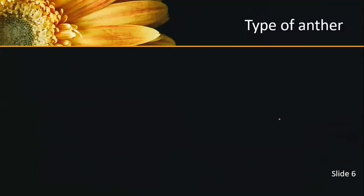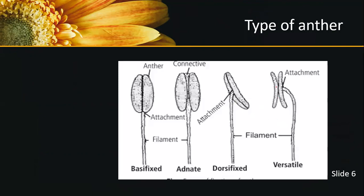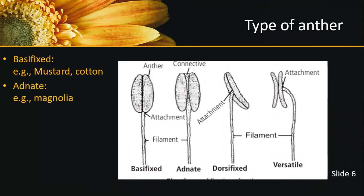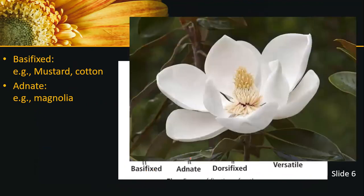These are the types of anther based on number of lobes. Now, based on the attachment of the filament to the anther, there are different types. The first type is basifixed, where the filament is attached at the basal region of the anther — examples are mustard and cotton. The second type is adnate, where the anther is attached along the entire length of the filament — an example is Magnolia.